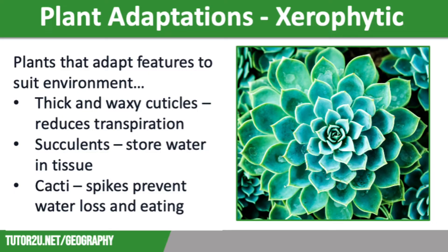Their bark is thick, which also makes them fire-resistant in the extreme heat. Due to the extreme heat, some plants have most of their biomass below the surface of the soil. This is where the temperatures are much cooler, and therefore there is less risk of vegetation shriveling up and dying. Many hot desert plants such as cacti are succulent, meaning they store water in their tissue. Cacti also have spikes, which stops animals from eating them and reduces water loss.